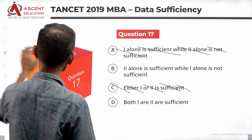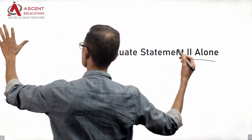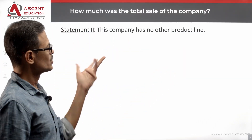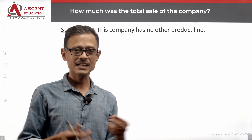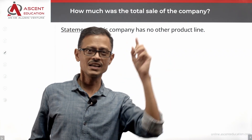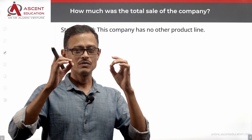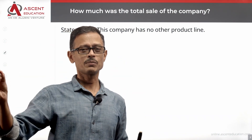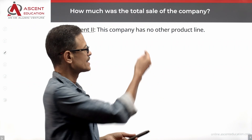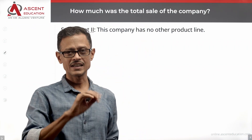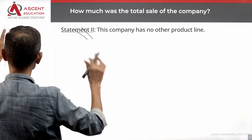Let's evaluate statement 2 — let's see whether that is sufficient. Take statement 2 alone. Statement 2 says: this company has no other product line. So, there is no other product line in the company. But statement 2 alone, without knowing the sales figures from statement 1, we will not have total sales. So, 2 alone is not sufficient.